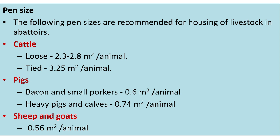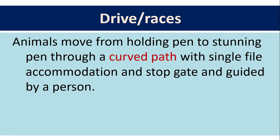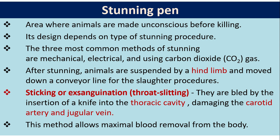From lairage, animals are transferred to slaughter halls situated about 10 metres away. Slaughter halls include the drive or races, standing pen, bleeding area, carcass dressing area, inspection area, and carcass washing area. Animals move from the holding pen to the standing pen through a curved path with single-file accommodation and a stop gate. The standing pen is where animals are made unconscious before killing, and its design depends on the type of stunning procedure used. The three most common stunning methods are mechanical, electrical, and carbon dioxide gas.